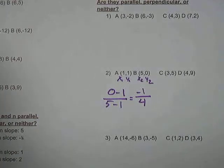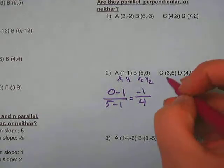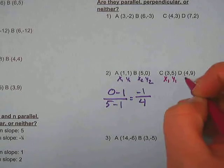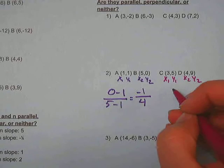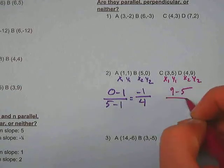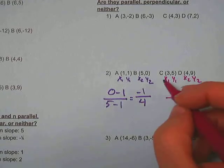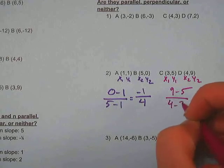Next, we want to find our slope for line CD. So we're going to do the same thing. We're going to label our points x1, y1, x2, y2. And we take y2 minus y1, so 9 minus 5, over x2 minus x1, so 4 minus 3.